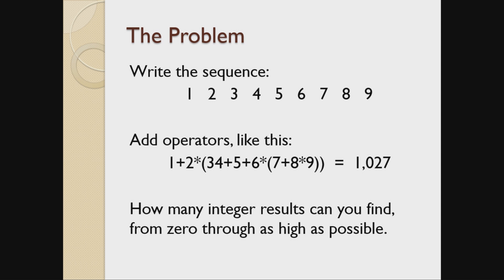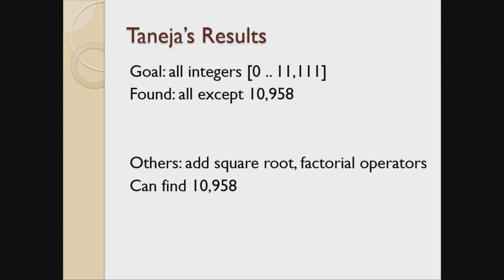The challenge is to find a formula that gives you zero, then the integer sequence one, then two, and see how far you can carry it. His goal was to find all the integers between zero and 11,111 — that just being a whimsical number — and he was able to find all of them except for 10,958. That's where the name of my talk came from.